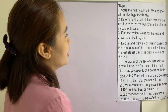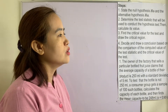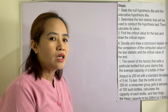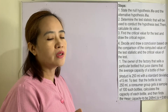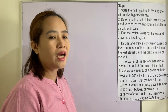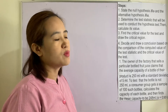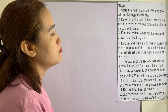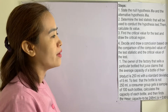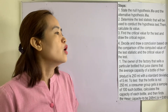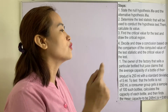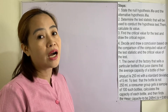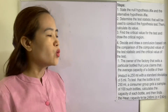Number three, find the critical value of the test and draw the critical region. This is found in the Z distribution table and in the T distribution table. And number four, decide and draw a conclusion based on the comparison of the computed value of the test statistic and the critical value of the test.